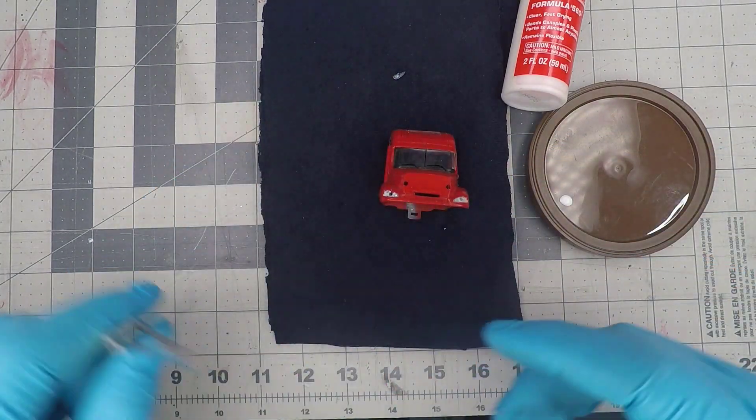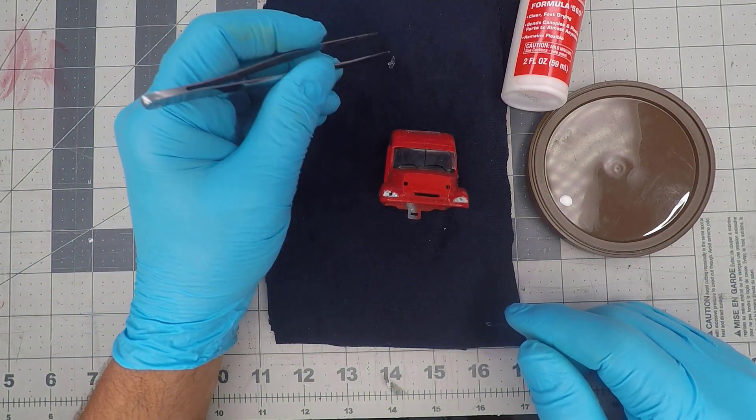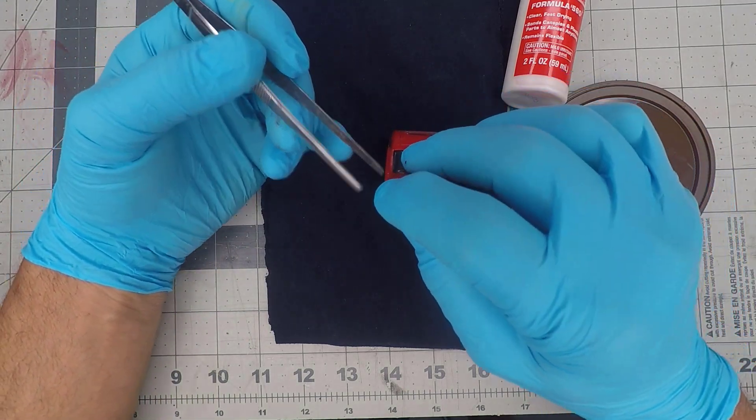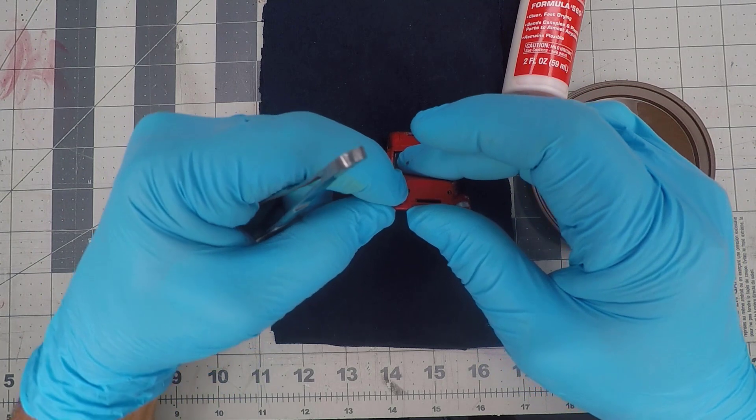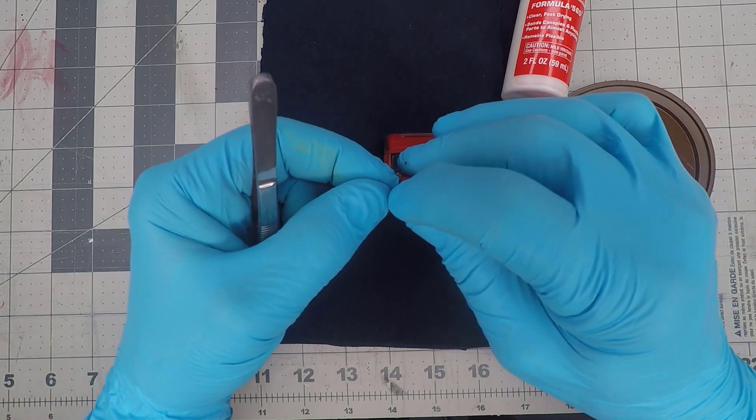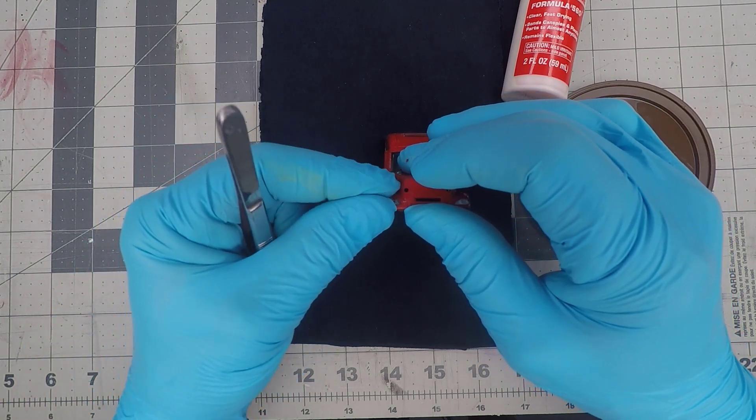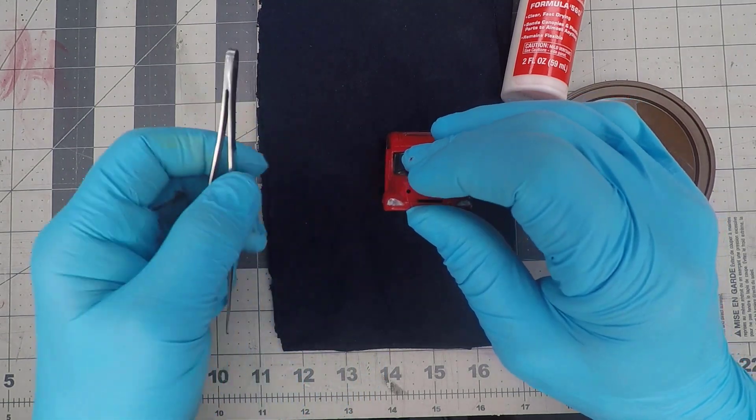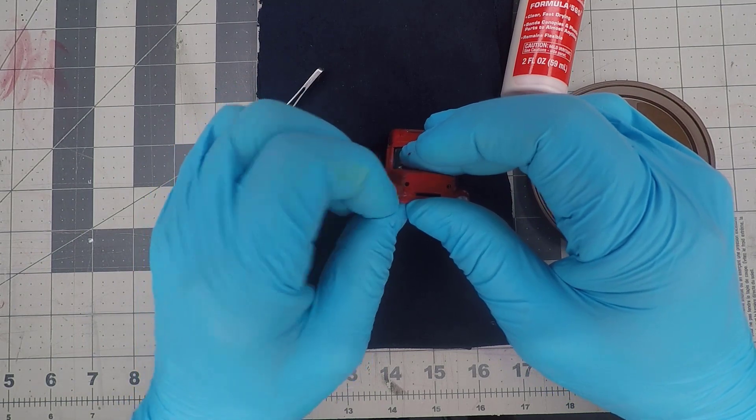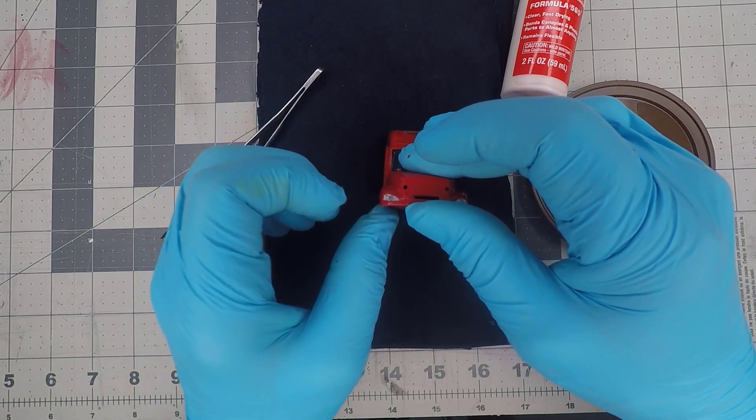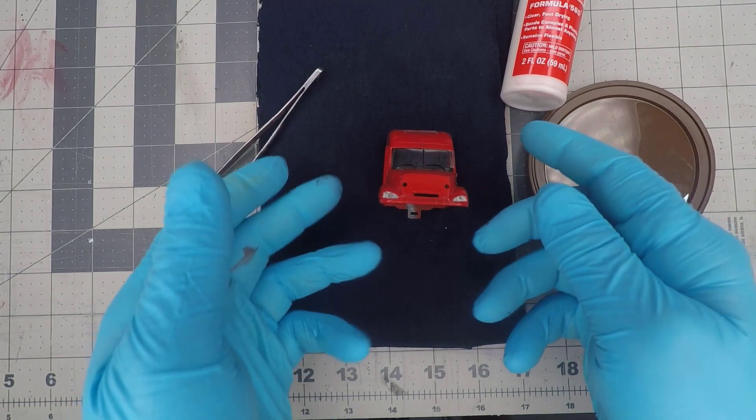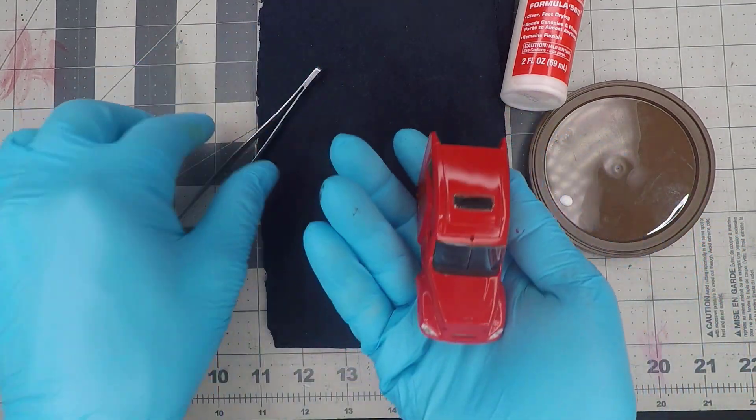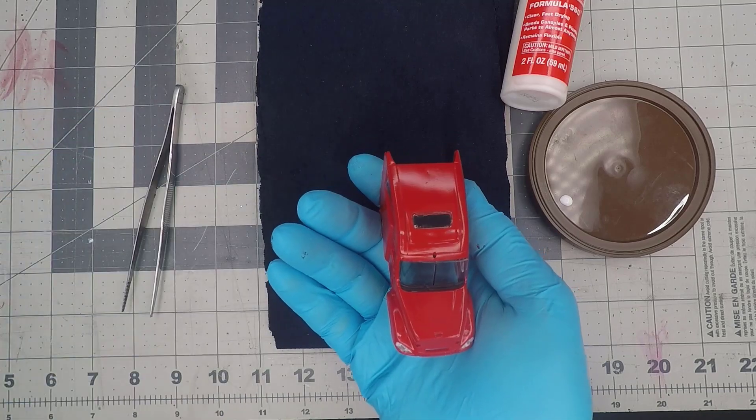That makes more sense. There we go, just like that. I said it does dry clear and I'm gonna show you an example of that. So last night I glued in this window right here and I used canopy glue.